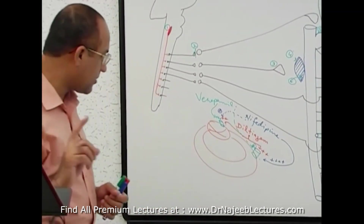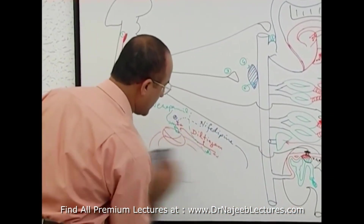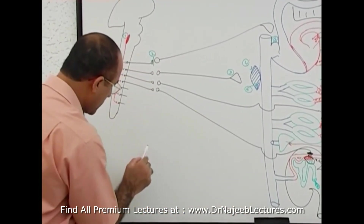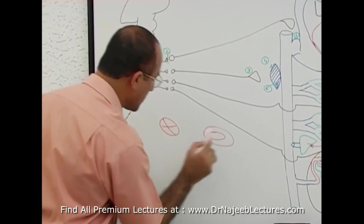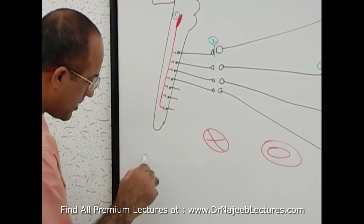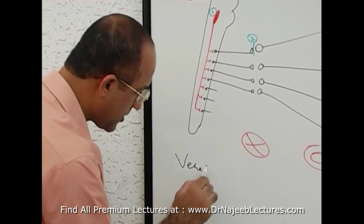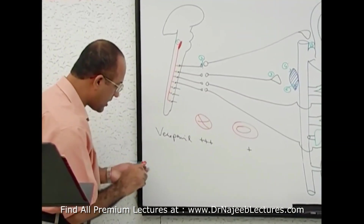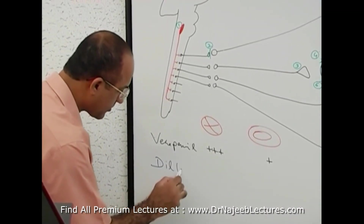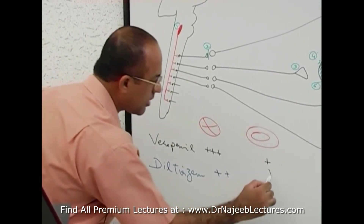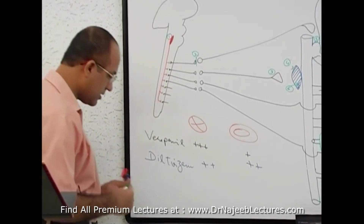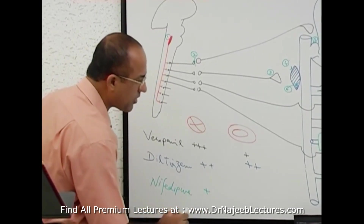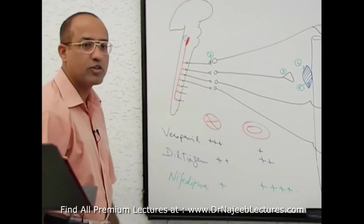To make a simpler diagram: here is the heart and here is the circulatory smooth muscle. Verapamil has more action on the heart and less action on arterial smooth muscle. Diltiazem has almost the same action on both areas. And nifedipine has less action on the myocardium but far more action on the arterial smooth muscle.